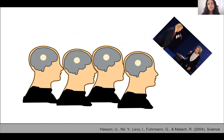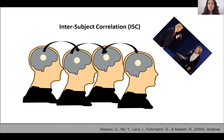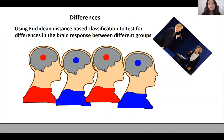Like many other labs that study the brain response to naturalistic stimuli, I use intersubject correlation to test for regions involved in processing naturalistic stimuli. When I'm interested in differences in the brain response, I use a classification method based on Euclidean distance between the responses of different participants. We developed this method during my post-doc at Princeton working with Uli Hassan.